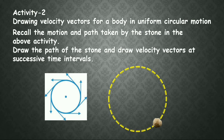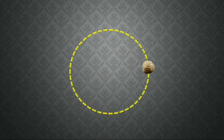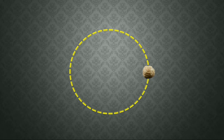So let us go with an activity. The aim of this activity is drawing velocity vectors for a body in uniform circular motion. Recall the motion path taken by the stone in the above activity. Draw the path of the stone and draw the velocity vectors at successive time intervals. Let us take a stone rotating in a circular path with constant speed. If you release the stone at a point, it will go in that direction — hence we can say the velocity is acting in that direction.